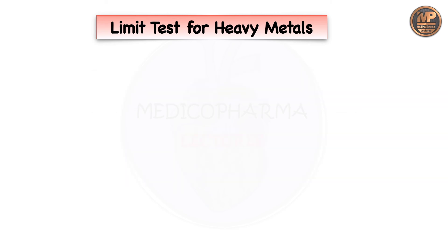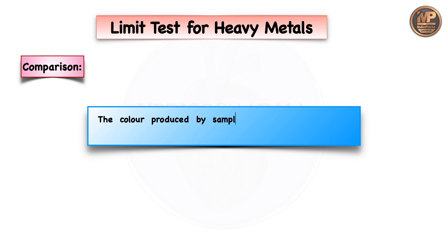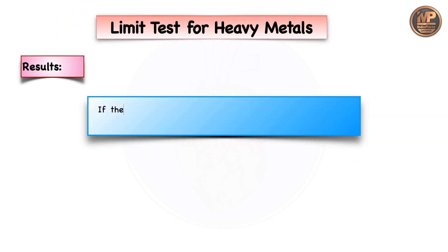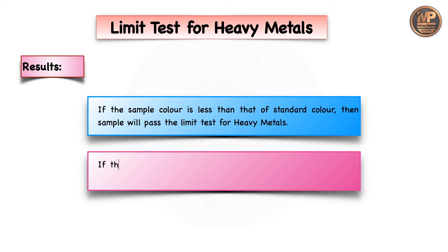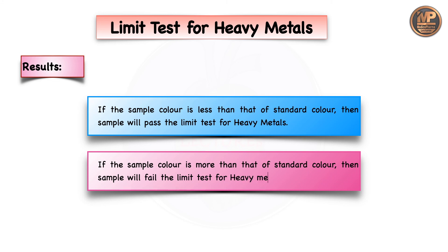For comparison, the colors produced by the sample and standard are compared by viewing against a white background. If the sample color is less than the standard color, the sample passes the limit test for heavy metals. If the sample color is more than the standard color, the sample fails. Always remember: the sample color should be less than the standard color to pass.